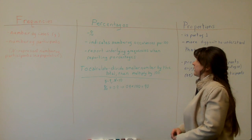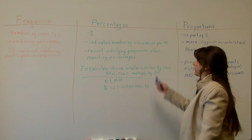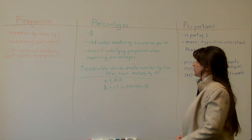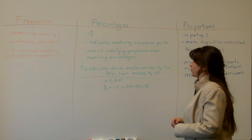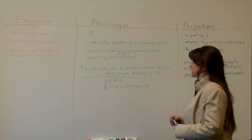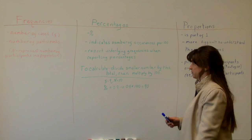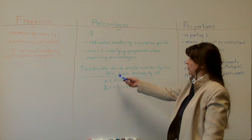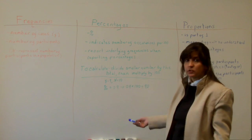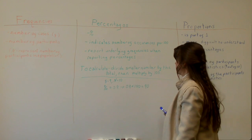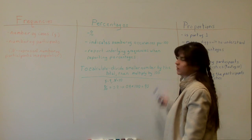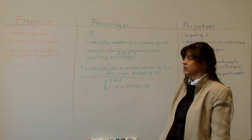You report the underlying frequencies when you report percentages. To calculate a percent, you divide the smaller number by the total, then multiply by 100.